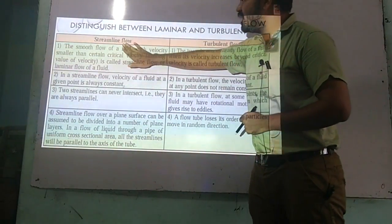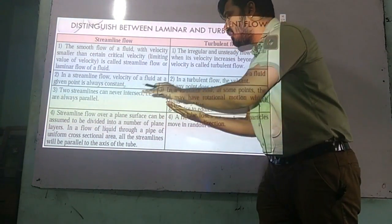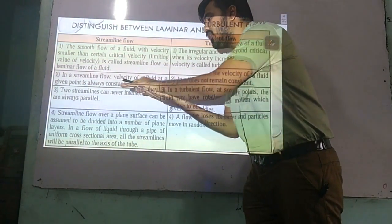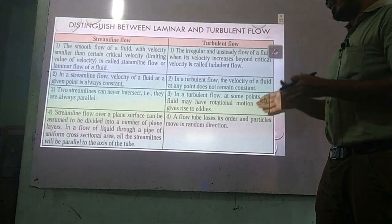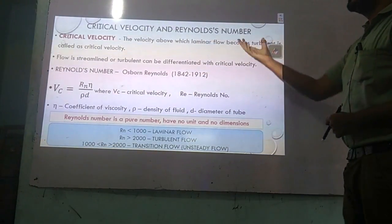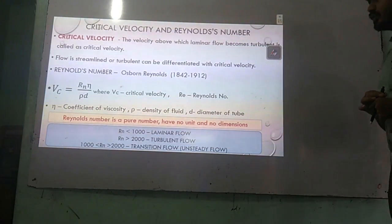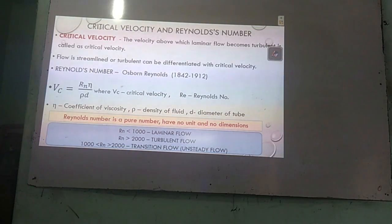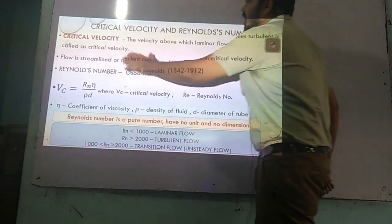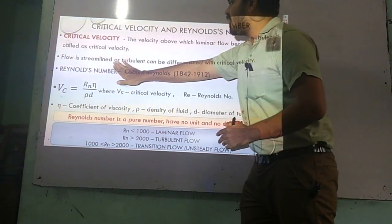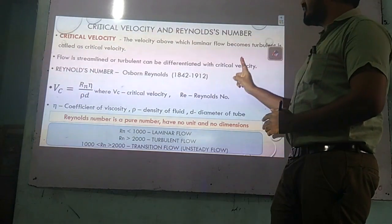In streamline flow, when liquid layers pass over one another, they have a particular cross-sectional area and pass uniformly. In turbulent flow, the particles or layers are not uniform — they move in random directions. Critical velocity is very important because it can differentiate streamline flow from turbulent flow. Critical velocity depends on Reynolds number Rn, eta (coefficient of viscosity), rho (density), and d (diameter of the tube through which liquid flows).